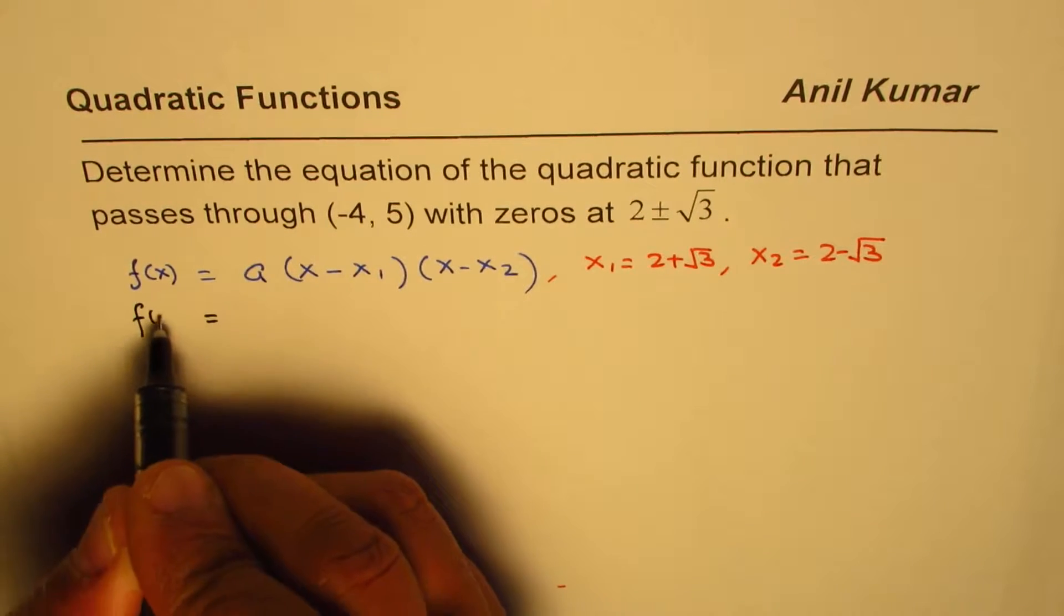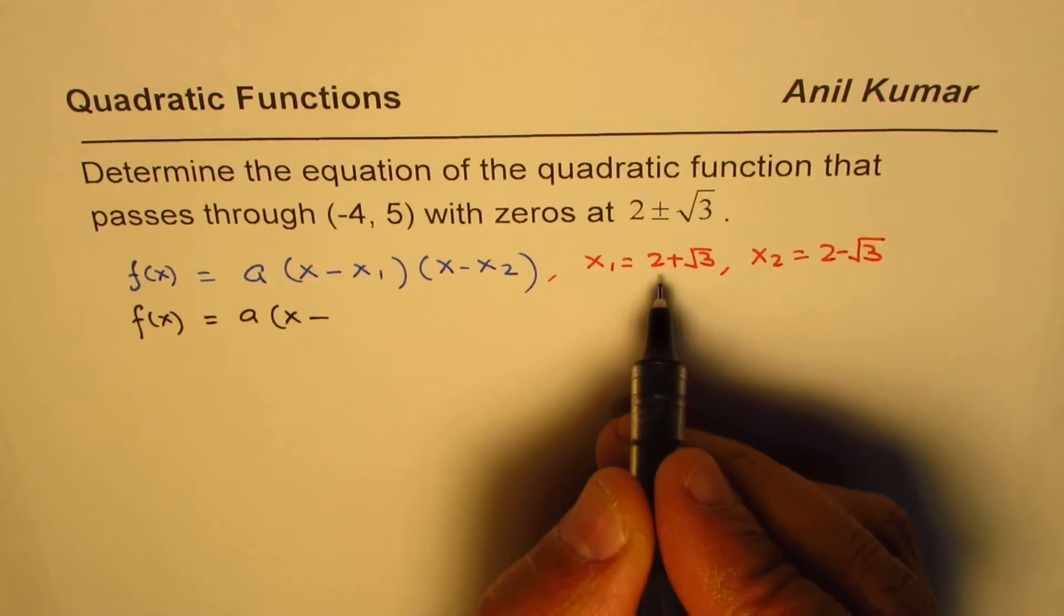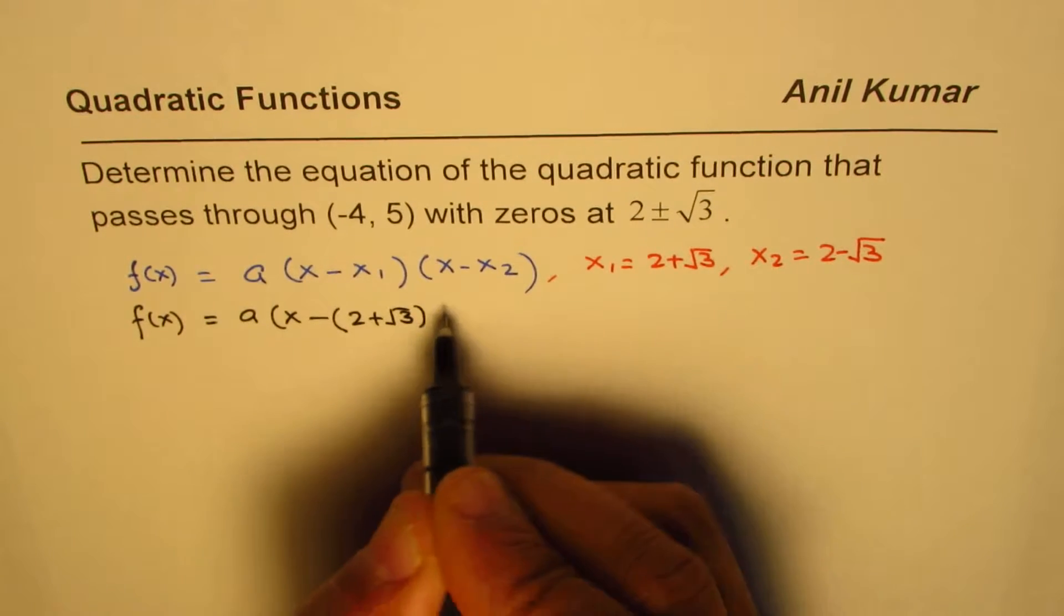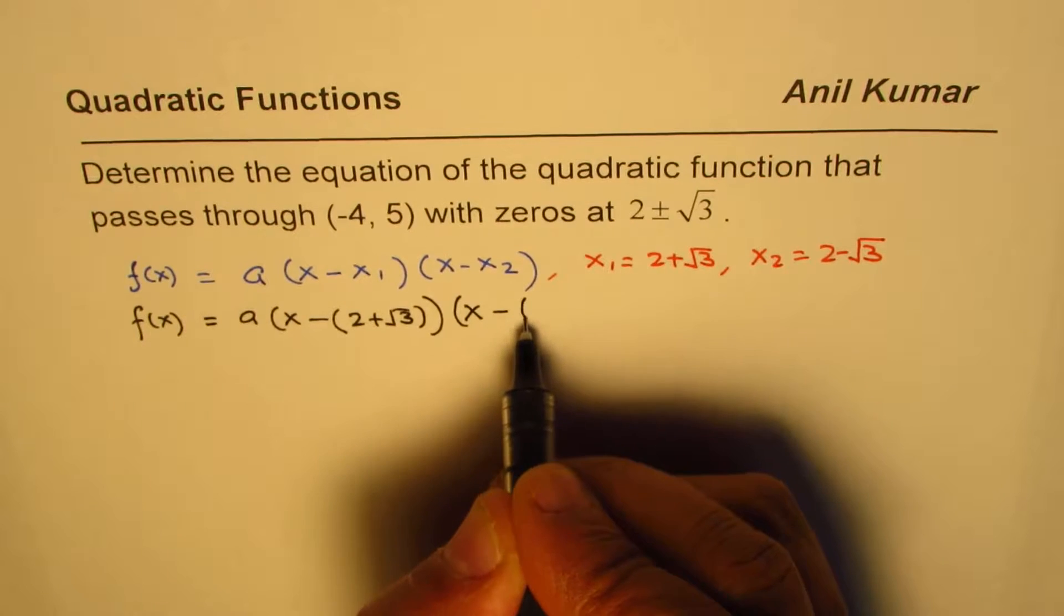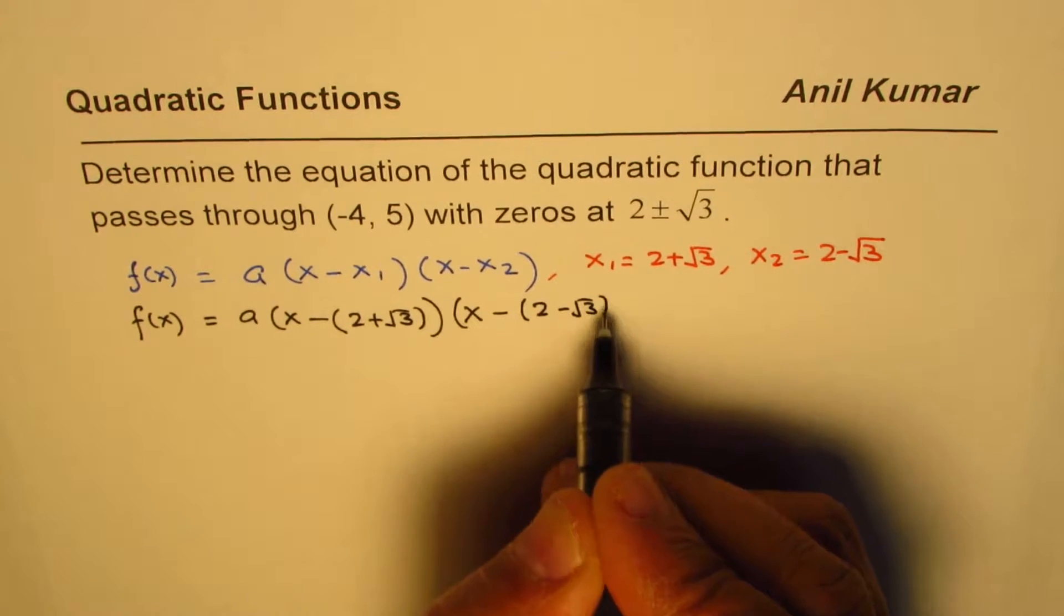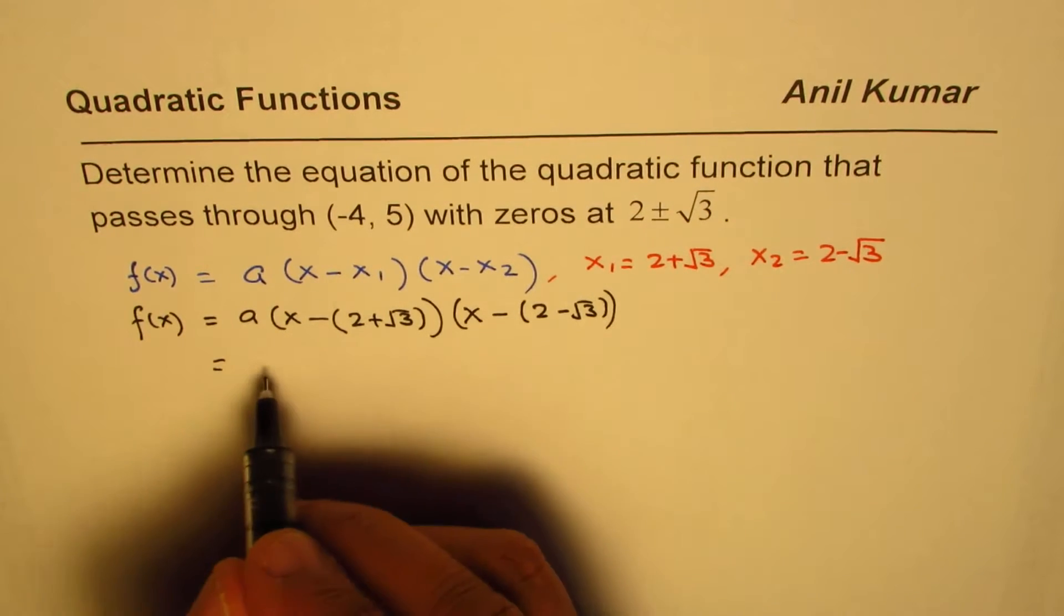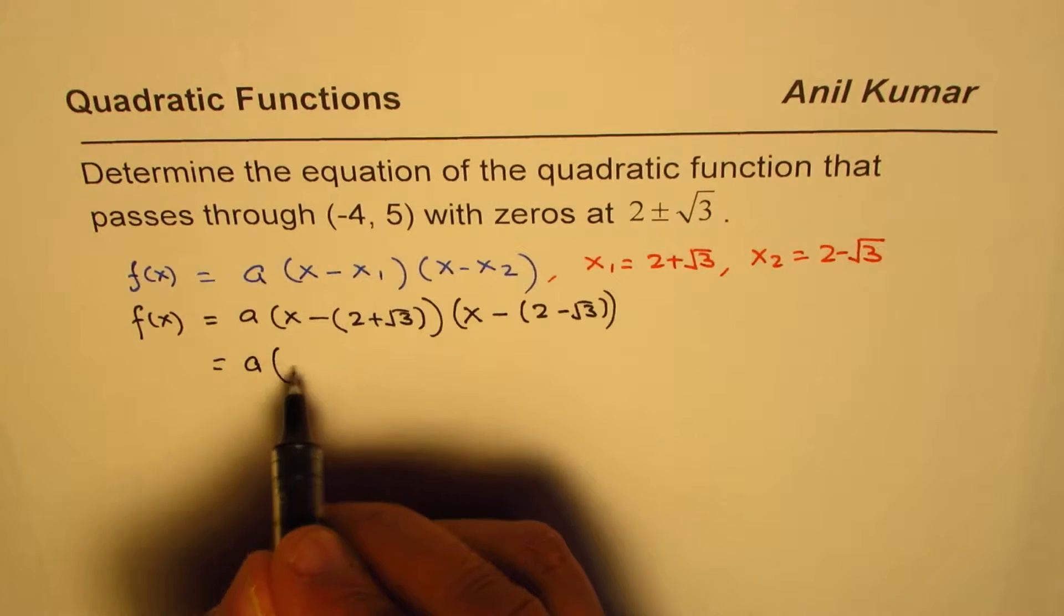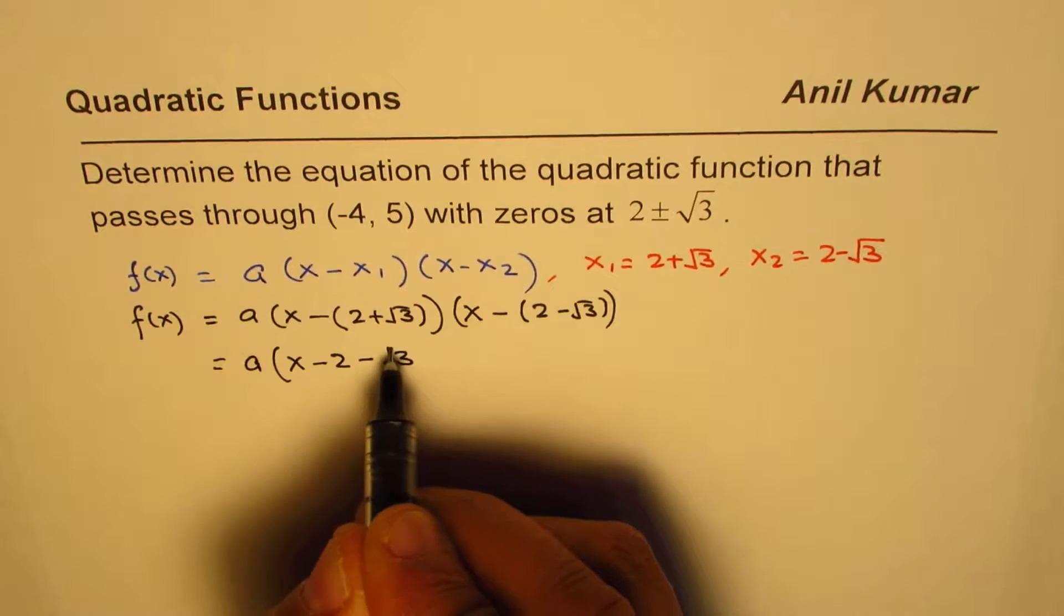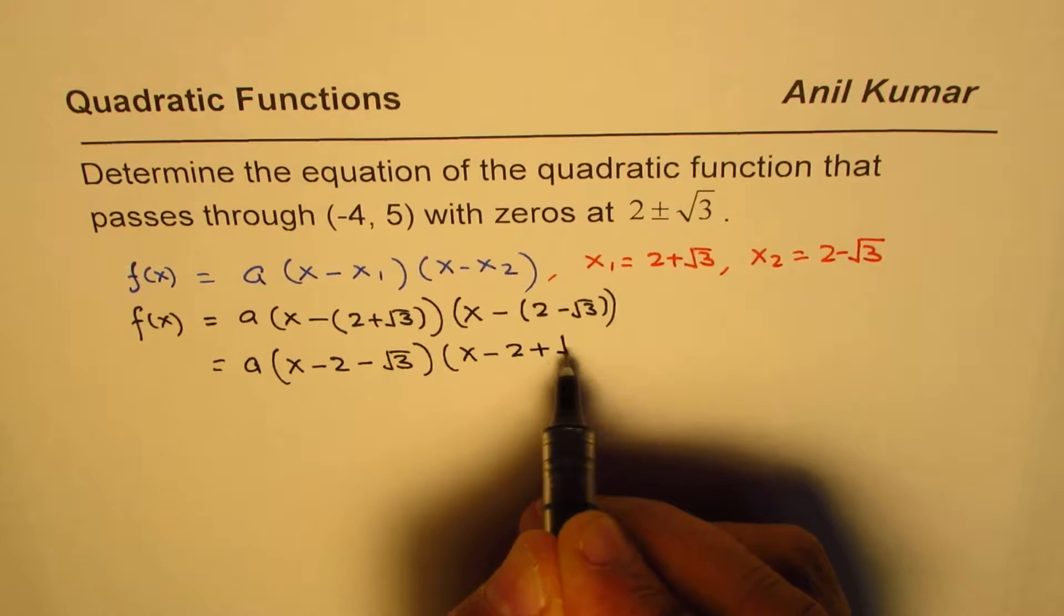So the quadratic function is a times x minus (2 + √3) times x minus (2 - √3). Now when you expand it, let me first do inside expansion and write this as (x - 2 - √3) and here we get (x - 2 + √3).